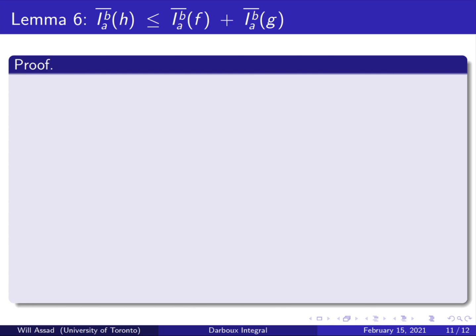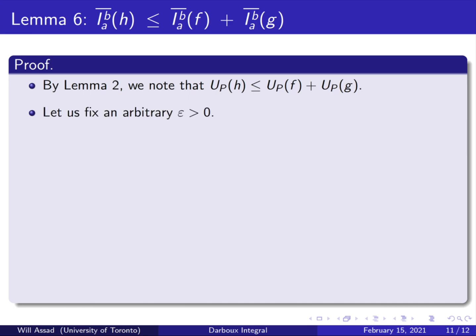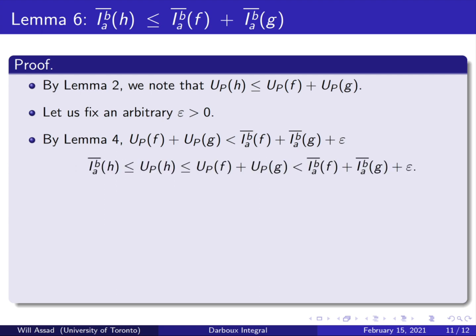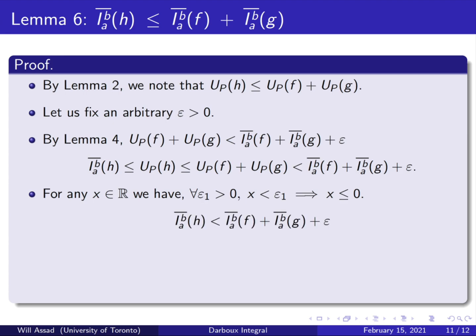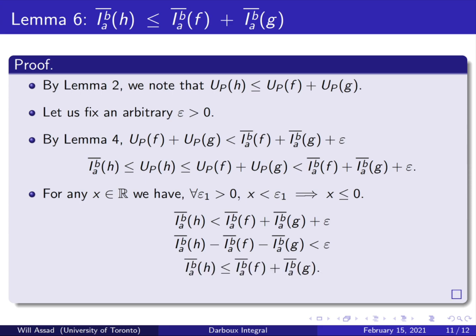Similarly, for lemma 6, we show that the upper integral of h is less than or equal to the upper integral of f plus the upper integral of g. From lemma 2, the P upper sum of h is less than or equal to the P upper sum of f plus the P upper sum of g. Fixing an arbitrary ε > 0 and applying lemma 4, since the upper integral is the infimum of all upper sums it must be less than or equal to the P upper sum of h. Rearranging and applying the same argument — if something is less than ε for all ε > 0 then it is ≤ 0 — we conclude exactly what we wanted to show.